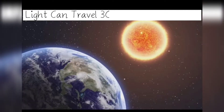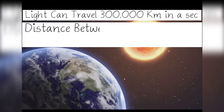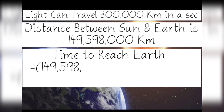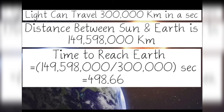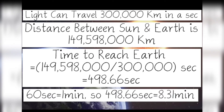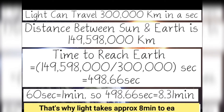Light can travel 300,000 km in 1 second. So to travel 149,598,000 km — the distance between the Sun and the Earth — light will take 498.66 seconds. Since 60 seconds equals 1 minute, 498.66 seconds equals 8.311 minutes. That's why the sunlight takes approximately 8 minutes to reach Earth.